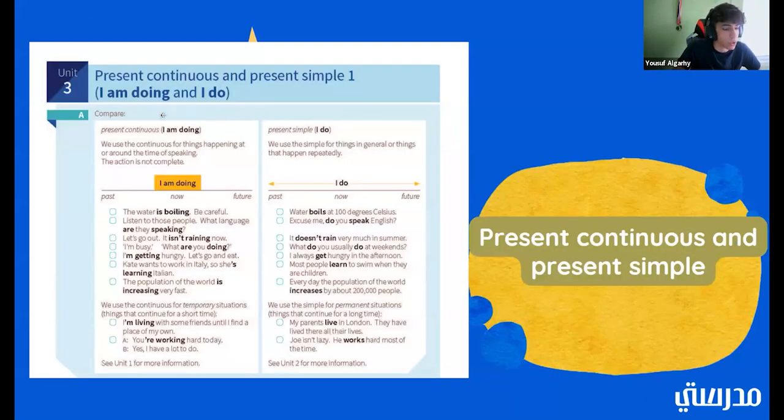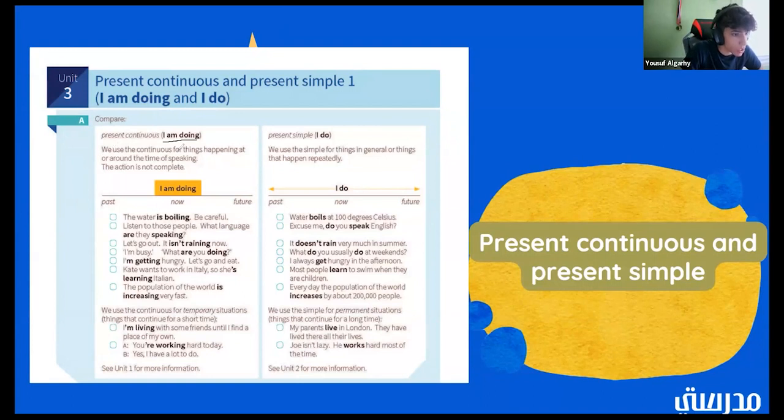Okay, so here we are comparing two different things. We're comparing present continuous and present simple. So we're going to start off with present continuous. Here we have our example. I am doing. We use the continuous for things happening at or around the time of speaking. The action is not complete, which means whenever you say something like this, it means you're not done with what you're doing. Then for present simple, we use the simple for the things in general or things that happen repeatedly.